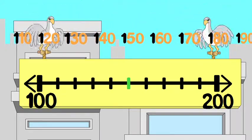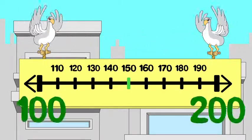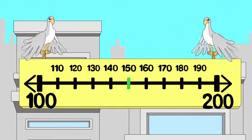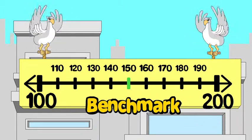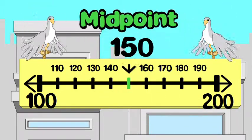The nearest hundred on either side of our number is a useful benchmark. And the midpoint is the number that is halfway between two benchmarks.